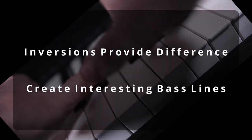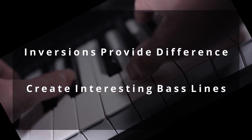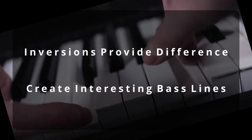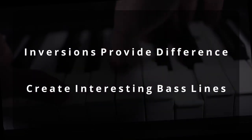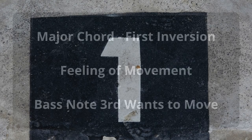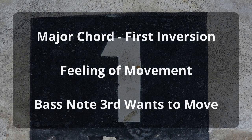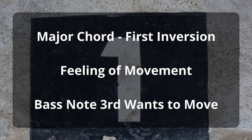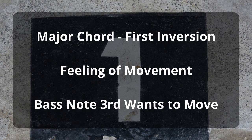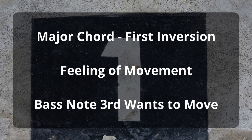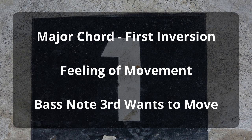Although they have the same notes as the standard major chord, inversions are useful in songwriting because they can provide a different colour or flavour to a chord progression and can provide us with interesting bass lines. The first inversion has a feeling of movement in it. The lowest bass note is the third note of the chord and wants to resolve up or down. This makes it great for creating a sense of movement in a chord progression.